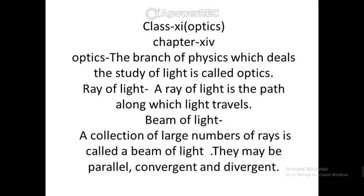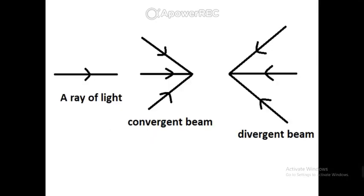In optics we have to introduce different terms, like ray of light. What do you mean by ray of light? Ray of light means the path of light — a straight line along which light travels is called a ray of light. A collection of a large number of rays of light is called a beam of light.